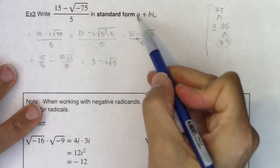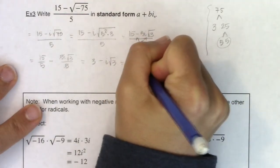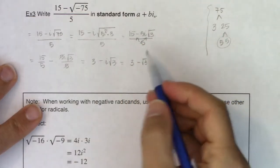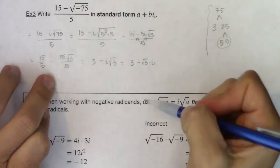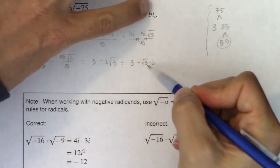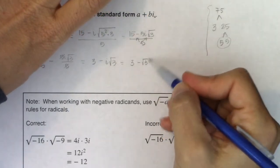Now this technically asked me to write it in the form a plus bi so I could write this as 3 minus root 3 times i. So just to try and line these up, for this particular problem a is the number 3 and b is the number negative square root of 3. So a plus bi.